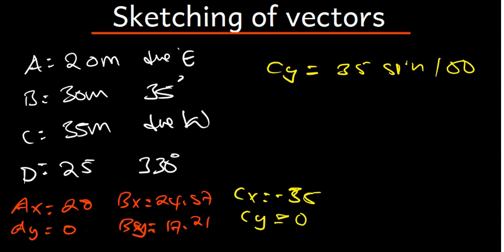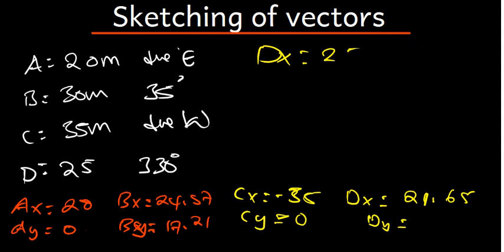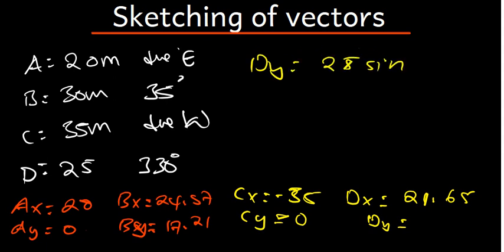For vector D at 330 degrees: D_x = 25·cos(330) = 21.65. D_y = 25·sin(330) = negative 12.5.